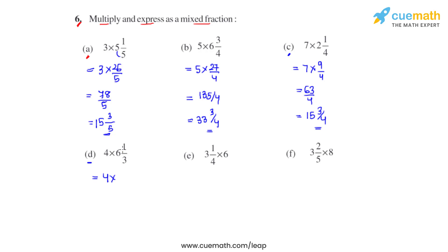In part d, 4 times 6 and 1 thirds will be converted into an improper fraction: 3 times 6 is 18, 18 plus 1 is 19, so 19 over 3. The product for these two will be 76 over 3. When we divide 76 by 3, we get the quotient as 25 and the remainder as 1.